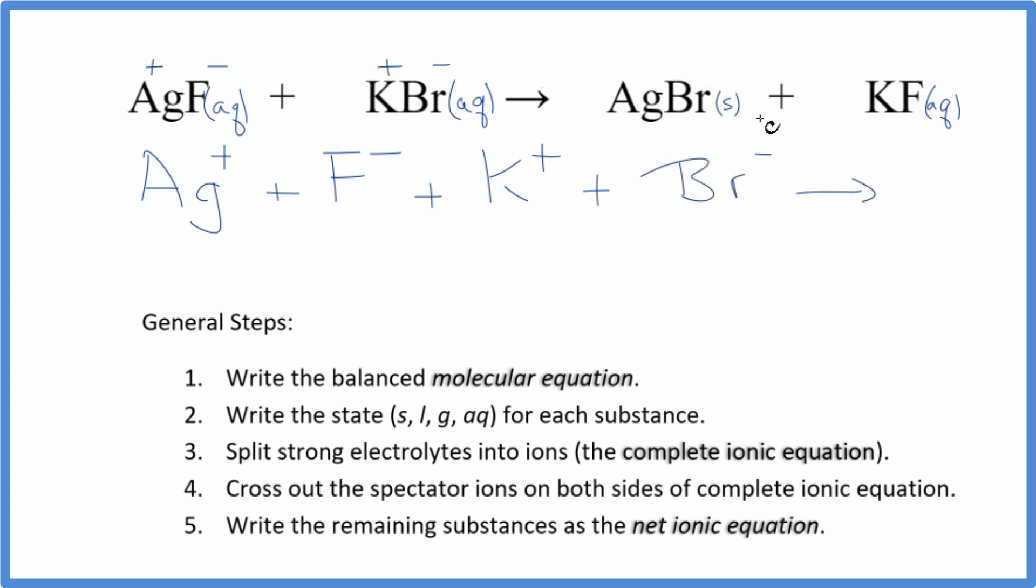The products, we do not split solids apart in net ionic equations. So we just write AgBr. We leave it together. Then we have a plus and a minus here. So we have plus the potassium ion and then the fluoride ion.